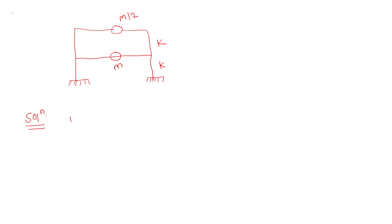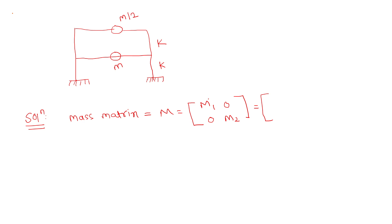Our first step is to prepare the mass matrix. It is a diagonal matrix. For lumped mass it is always [m1, 0; 0, m2]. So m1 is the mass of the first story, that is m, and m2 is the mass of the second story, that is m/2. Taking m common, the mass matrix becomes m × [1, 0; 0, 1/2].